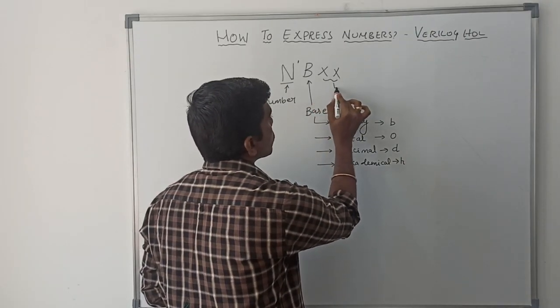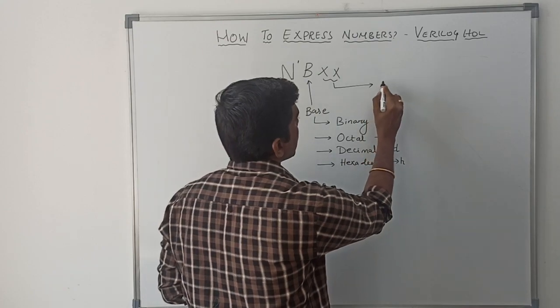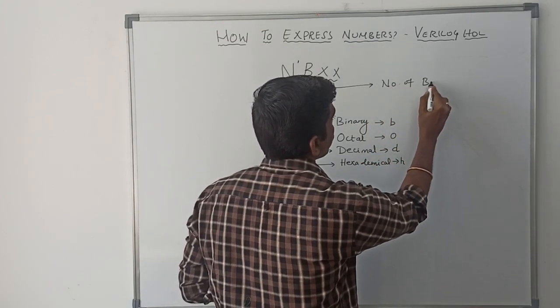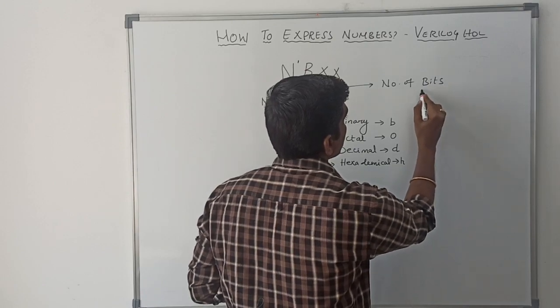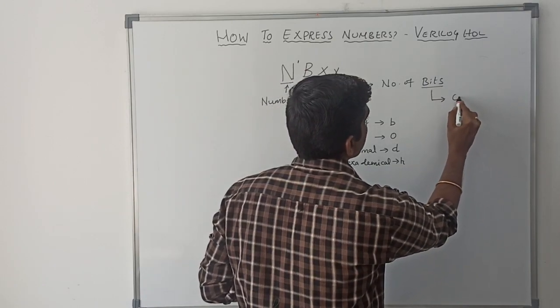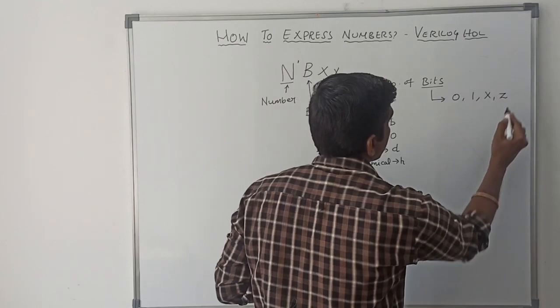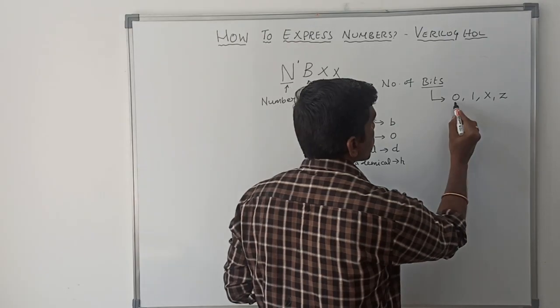Then this two X. This two X represents number of bits. These bits are like 0, 1, don't care and z.